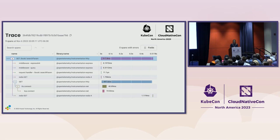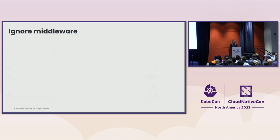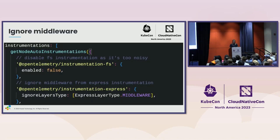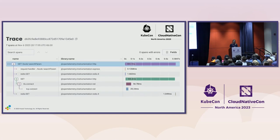Now I'm looking at my trace and I'm still thinking there is some extra middleware there. I don't know if I care about all that either — I'm using Express here, but maybe that's still some extra stuff I don't really need. So again, I can go into my setup file, and in this case I'm just disabling these extra middleware layers. Now when I look at my new trace, it's a lot more manageable — not as unwieldy — and I can really see what's important to me in this trace.